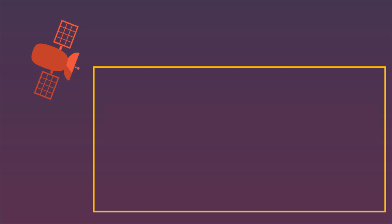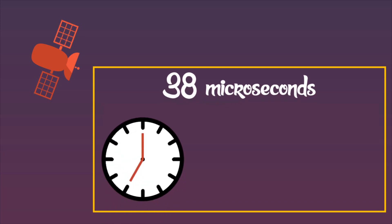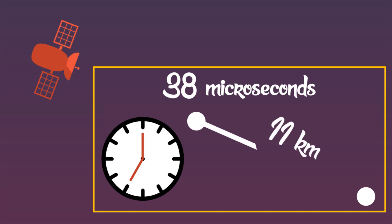With this, satellites would be 38 microseconds faster than Earth-based clocks — enough to disrupt the system in a way that GPS would be 11 kilometers inaccurate to your position daily.